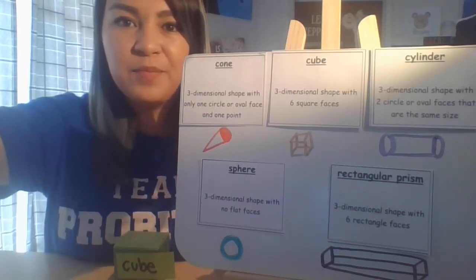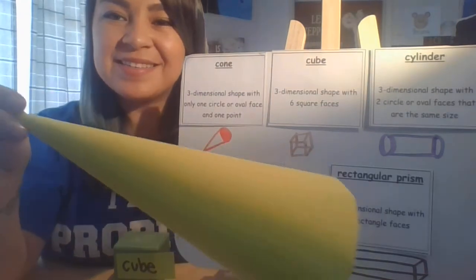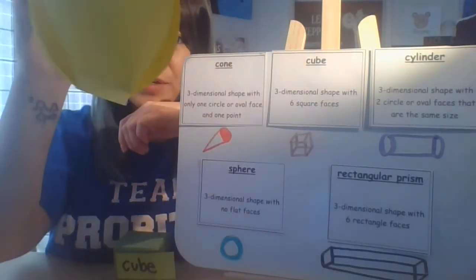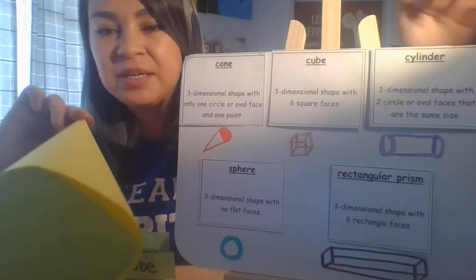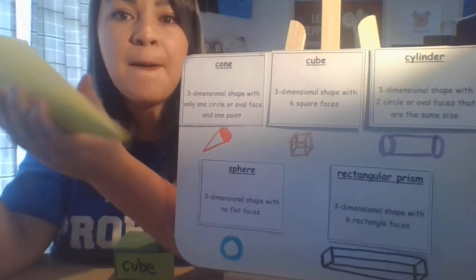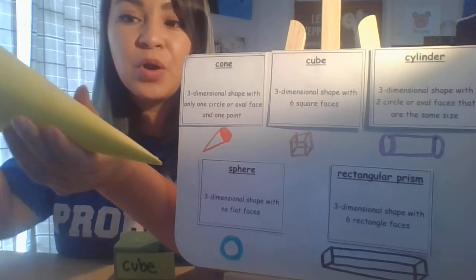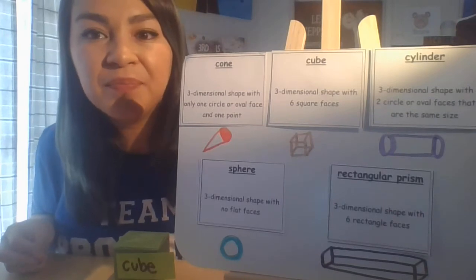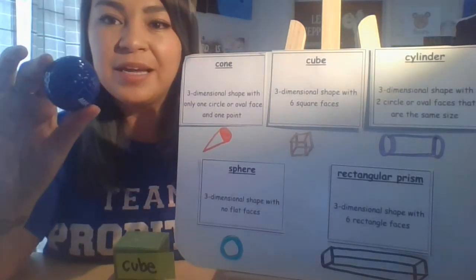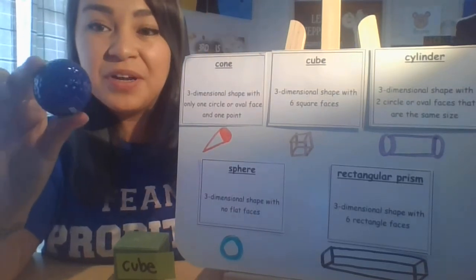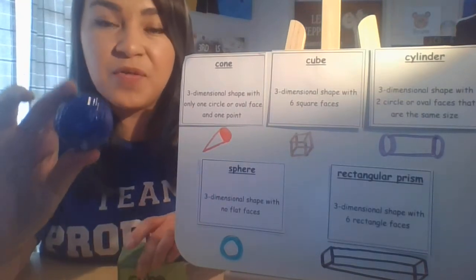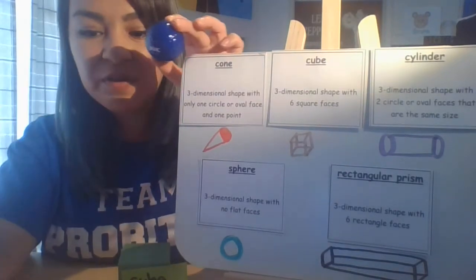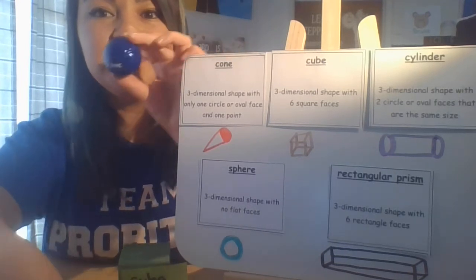Let's try one more. Ready? What shape is this? Is it a cone? Yes — it has the oval side on one side, but unlike the cylinder, it doesn't have another oval side. It has a point. So this is called a cone. Good job. And we have one more — the sphere. The sphere has no flat sides and no flat faces, which means that it could roll. Usually you will see these like any of the balls that you have around your house. So this is called a sphere.